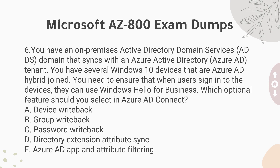Question 6: You have an on-premises Active Directory Domain Services (ADDS) domain that syncs with an Azure Active Directory (Azure AD) tenant. You have several Windows 10 devices that are Azure AD Hybrid Joined. You need to ensure that when users sign in to the devices, they can use Windows Hello for Business. Which optional feature should you select in Azure AD Connect? A. Device Write-Back. B. Group Write-Back. C. Password Write-Back. D. Directory Extension Attribute Sync. E. Azure AD App and Attribute Filtering.